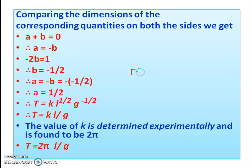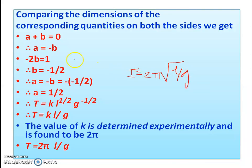That is the formula: T equal to 2π under root L upon G. That is the formula for the periodic time of a simple pendulum. We derived it using dimensional analysis as a technique to find the relationship between related physical quantities.